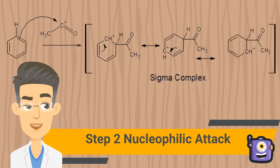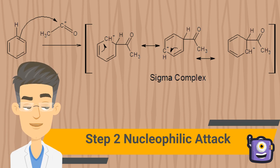Step number two: nucleophilic attack. In this step, the aromatic ring functions as a nucleophile and attacks the electrophile with bond electrons, forming the intermediate sigma complex that undergoes resonance.